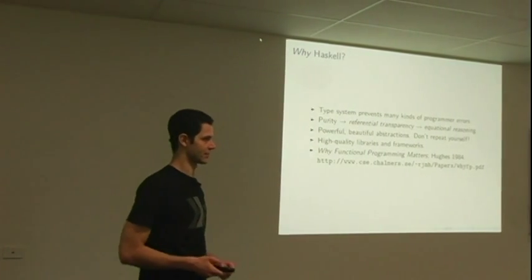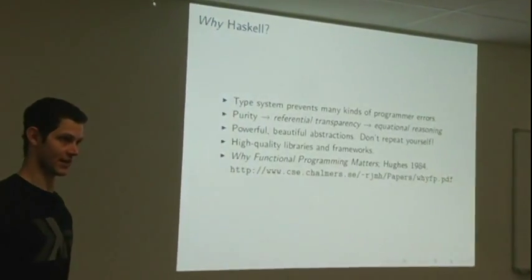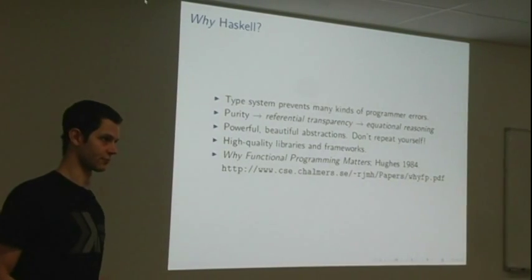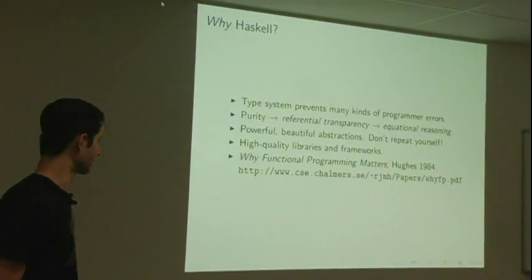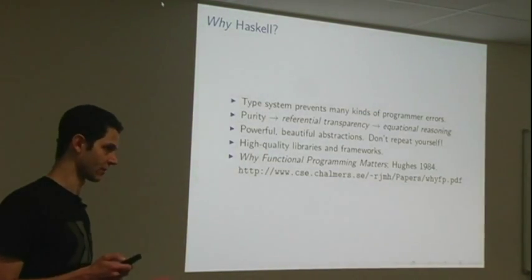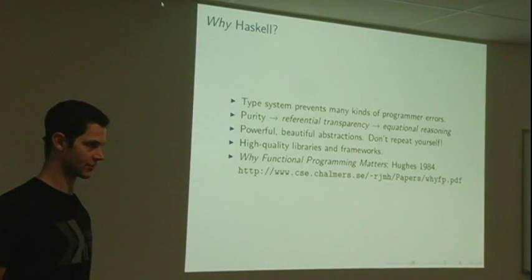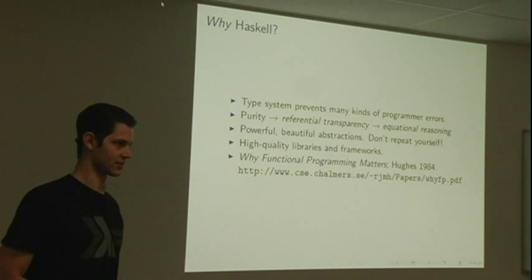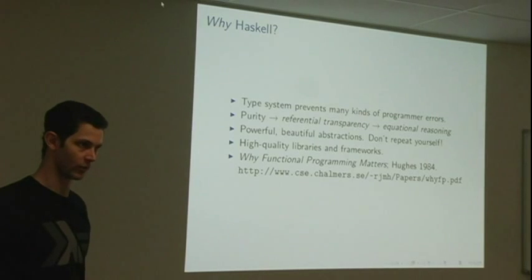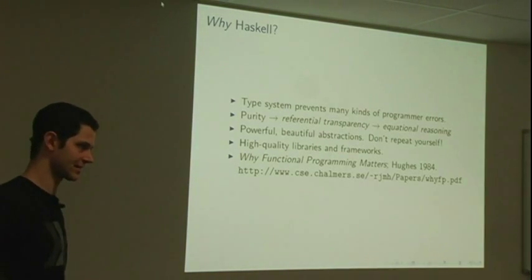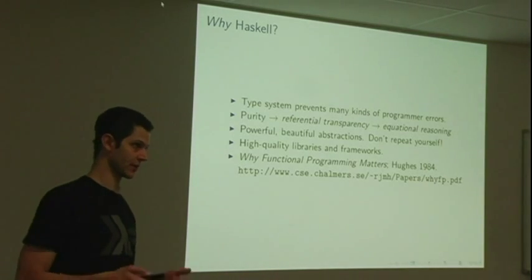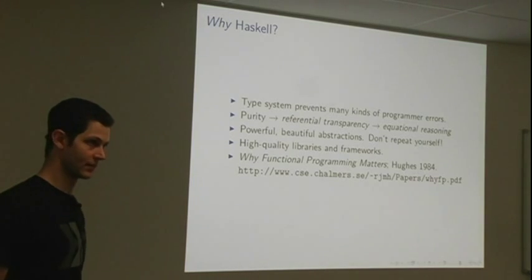So why Haskell? The type system prevents many kinds of programmer errors. I make a lot of mistakes. I think most of us do. Therefore, I want tools that are going to help me make fewer mistakes, that are going to rule out incorrect programs as much as possible. The purity gives rise to referential transparency, which gives rise to equational reasoning and the ability to reason about programs at scale. There are powerful, beautiful abstractions. If you take the don't repeat yourself mantra seriously, you should really be doing functional programming. Haskell has high quality libraries and frameworks. There's this paper by Hughes from 1984 that I would encourage you to check out.